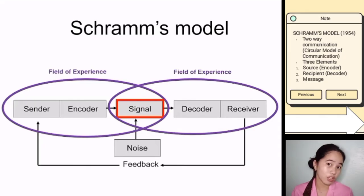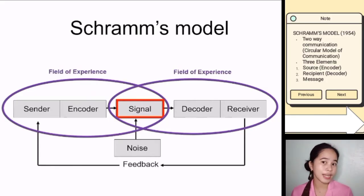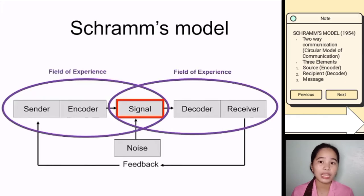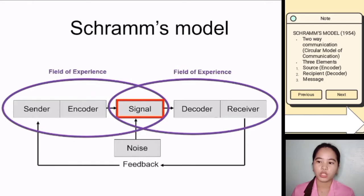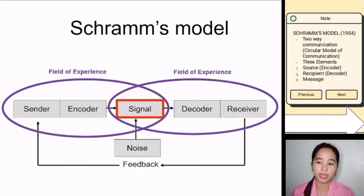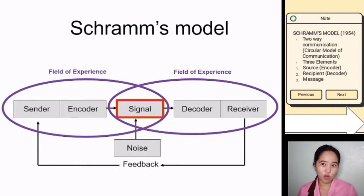This model is important because by articulating the way communication happens, it helps us control for certain things to make our learning environments better. For example, anticipating what noise might impact the signal can help us control for it. Understanding that our examples have relevance to both parties means we carefully consider who our learners are so we can better bridge both fields of experience. Moreover, in this model it is two-way communication, or a circular model of communication. That's all for Schramm's model.